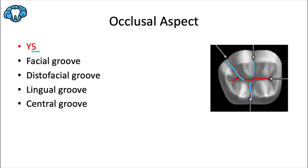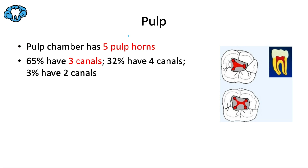The central groove travels from the distal pit to the mesial pit, and the central pit is the deepest part of the occlusal surface. As far as the pulp is concerned, there are five pulp horns — one for each cusp tip. 65% of the time there are three canals: two in the mesial root and one in the distal root. 32% of the time there are four canals: two in each root. Only about 3% of the time are there just two canals — one in each root.